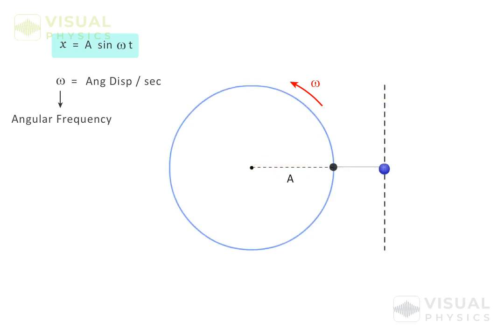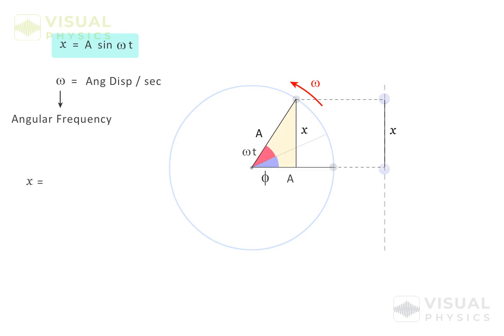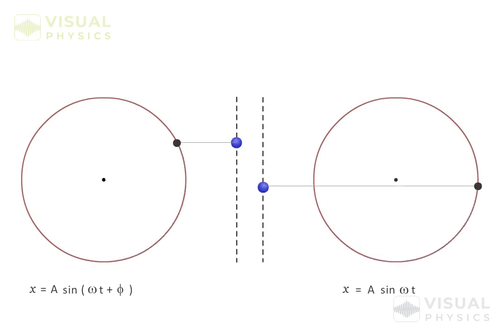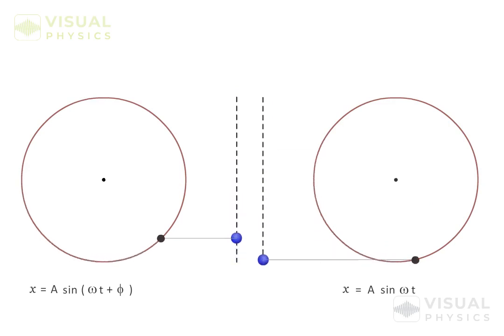If instead of starting from this position, the particle starts from such a position, then the position of the particle after time t will be equal to A sin(ωt + Φ). This angle Φ represents the phase constant of a simple harmonic motion. When we say two simple harmonic motions have a phase difference of Φ, this means that their corresponding circular motions are separated by the initial angle Φ.